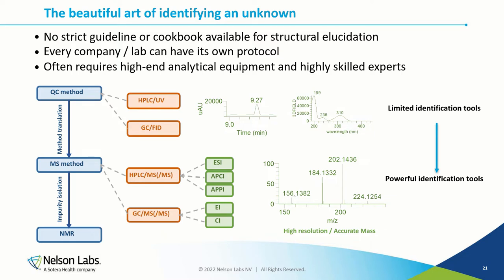First, we start with the typical QC methods, which are very often LC-UV or GC-FID methods. They must be able to detect impurities, but they focus on the quantification aspect. You have some information for identification — for example, the retention time or the UV spectrum — but this information is often too limited for complete structural elucidation. So for full identification, in most cases the method must be translated to a mass spectrometry compatible method.